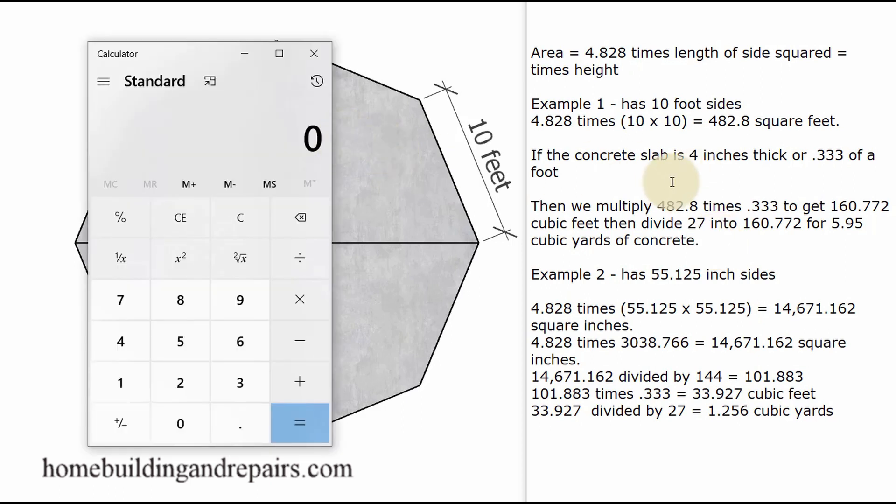So let's break out our trusty calculator. And I'm going to start by multiplying this number first, because you don't want to make the mistake of multiplying this number times 10 and then times 10. Then we will multiply this number times this number.